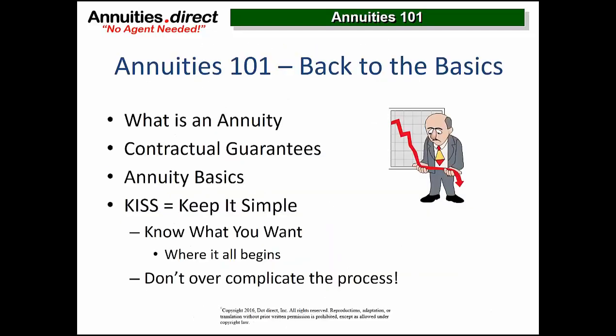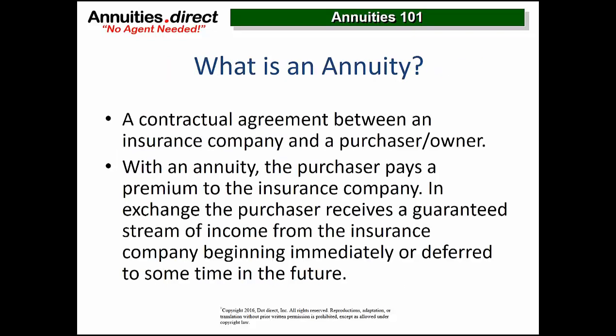An annuity is a contractual guarantee. It's a transfer-of-risk product between you and the annuity company. You want to keep it simple. At the end of the day, you want to start at the finish line to find out if you need an annuity. The two questions are: what do you want the money to contractually do, and when do you want those contractual guarantees to start? Don't get complicated — that's it.